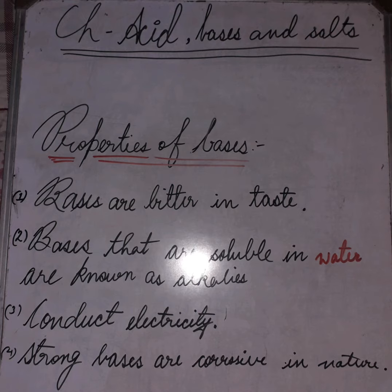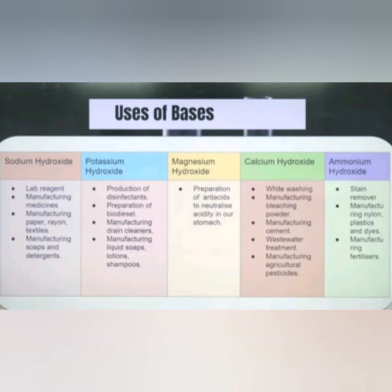Like acids, bases also conduct electricity — this is a similarity between acids and bases. Strong bases are also corrosive in nature, for example sodium hydroxide and potassium hydroxide. Examples of bases include sodium hydroxide, potassium hydroxide, magnesium hydroxide, and calcium hydroxide. We can classify bases as strong bases and weak bases — sodium hydroxide and potassium hydroxide are strong bases.